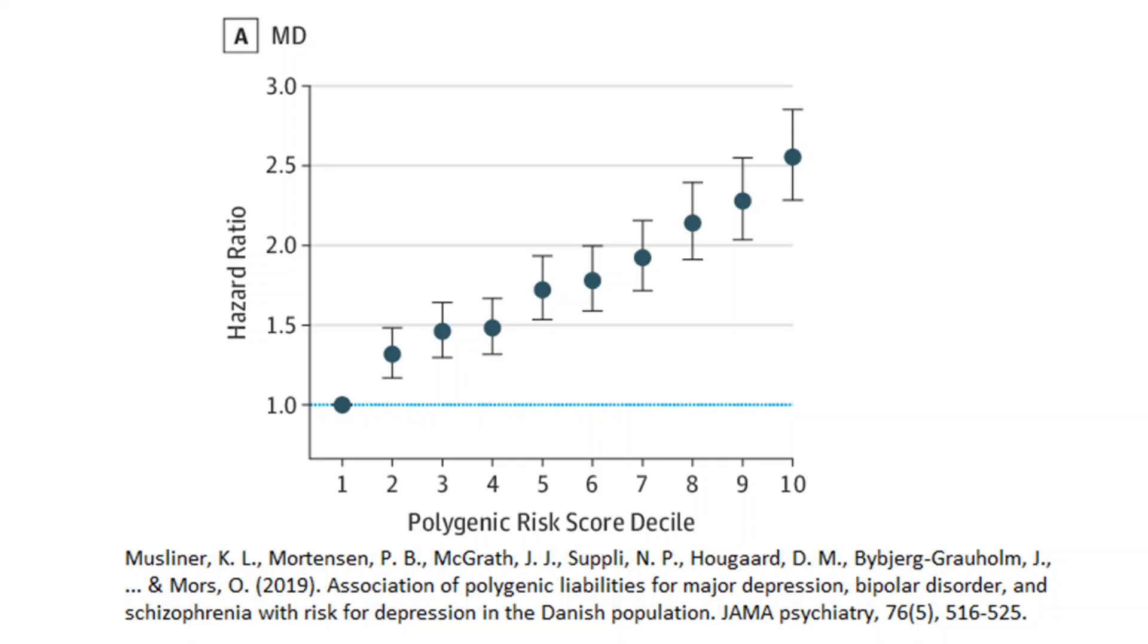The same method can be used for the prediction of dichotomous traits, however, instead of predicting the level of the trait, polygenic scores are used to predict the likelihood of a trait occurring. For example, here is a graph showing the deciles of a polygenic score for a diagnosis of major depression in a sample of the Danish population.